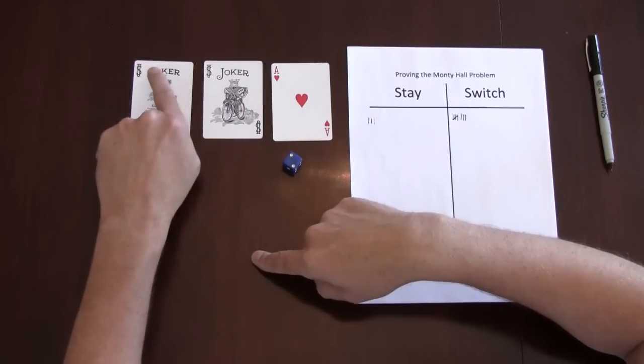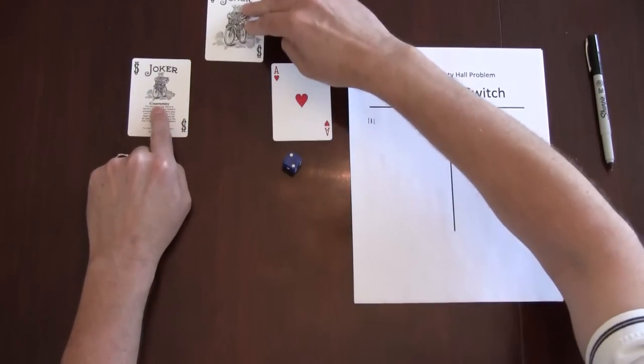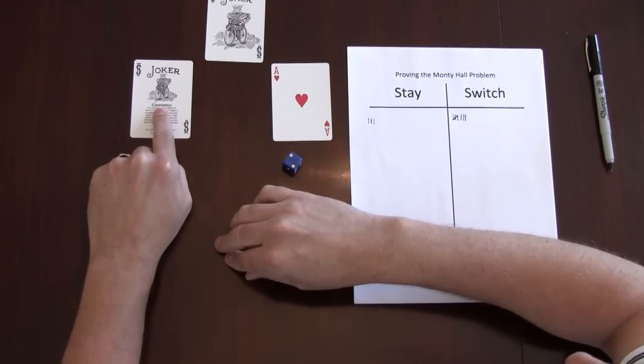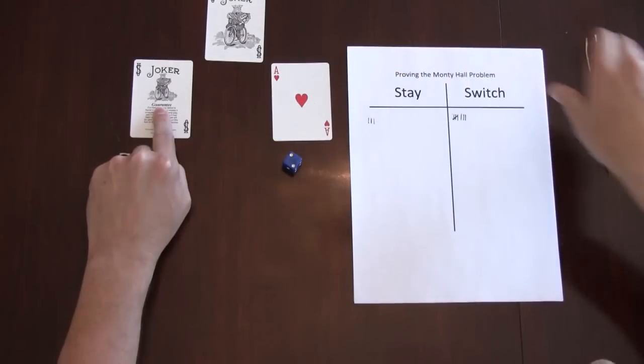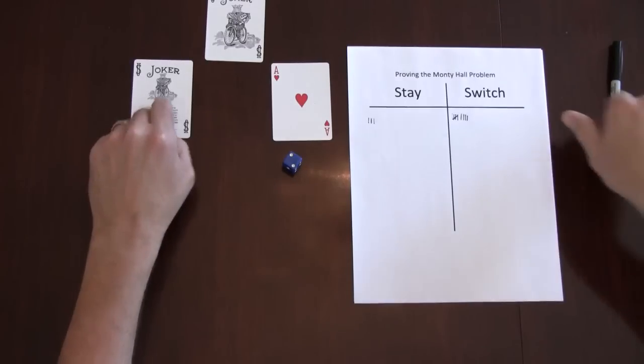In this case, one, two, three, four, five, six, I choose the first door. Monty shows us a goat and in this case, if I switched, I would have gotten the car.